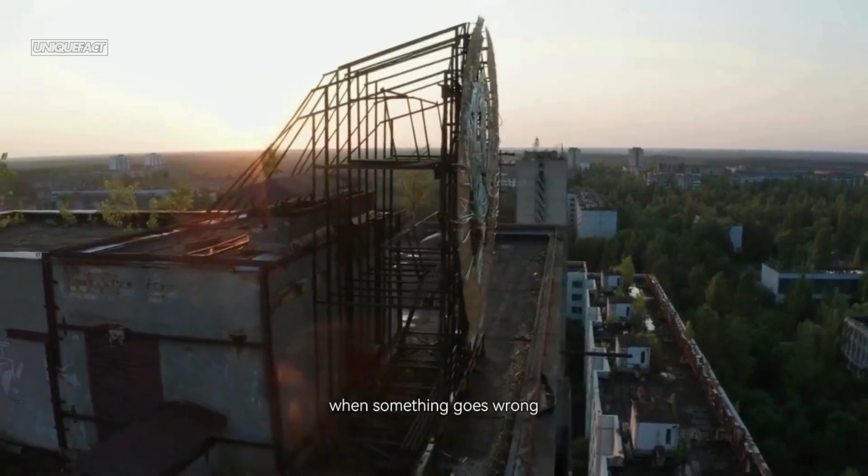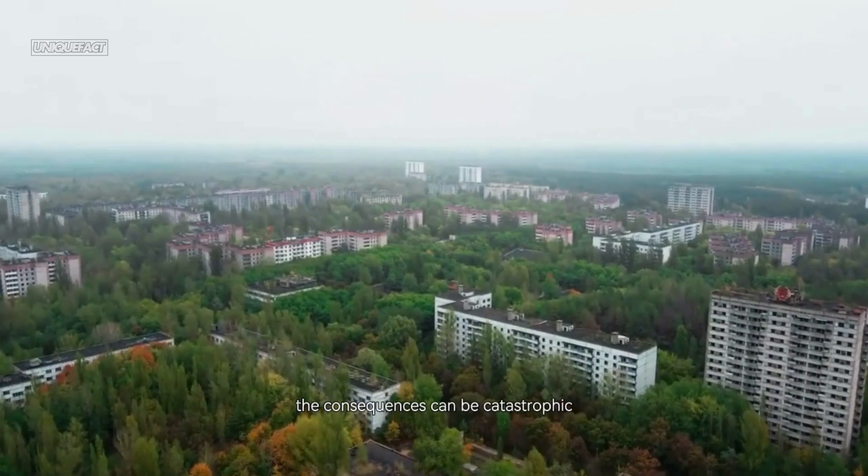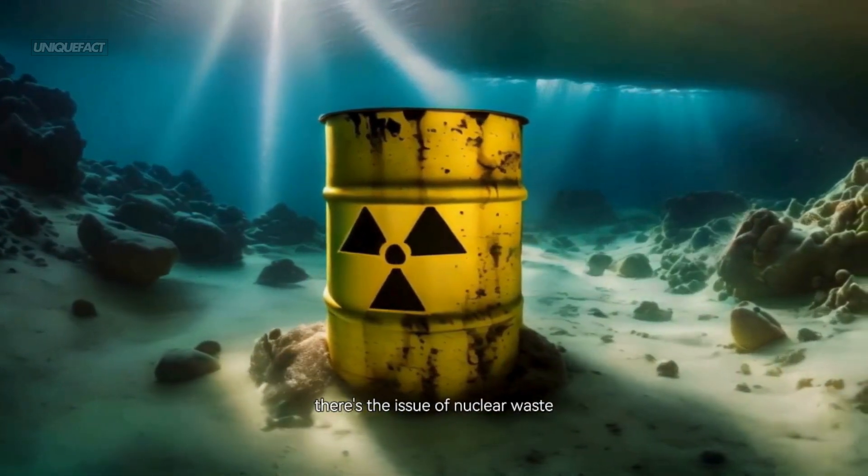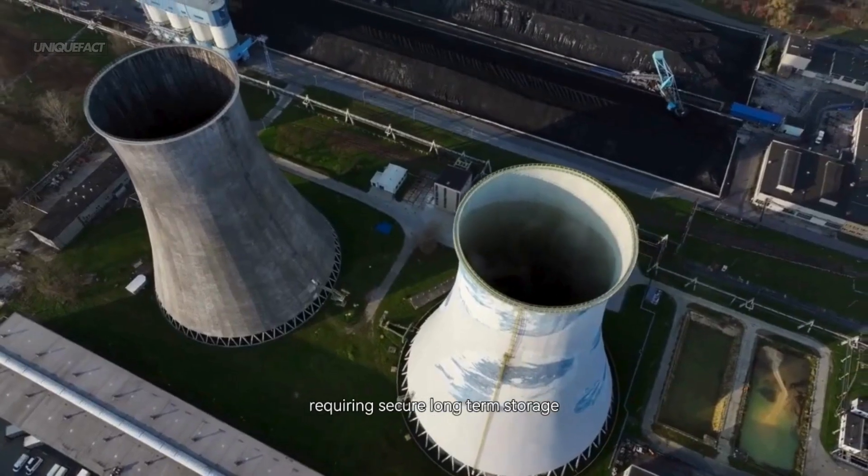When something goes wrong, like at Chernobyl in 1986 or Fukushima in 2011, the consequences can be catastrophic. Radiation leaks, evacuations, long-term damage to people, land, and trust. And even when reactors run smoothly, there's the issue of nuclear waste - dangerous for thousands of years, requiring secure long-term storage.